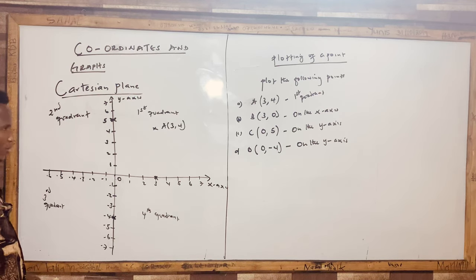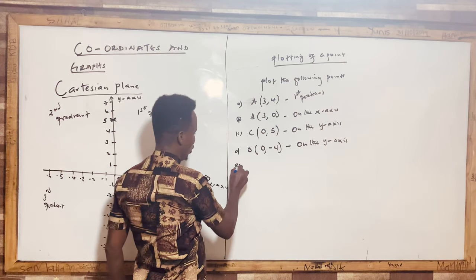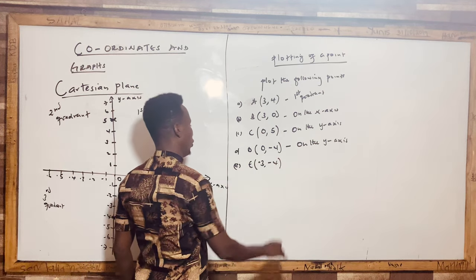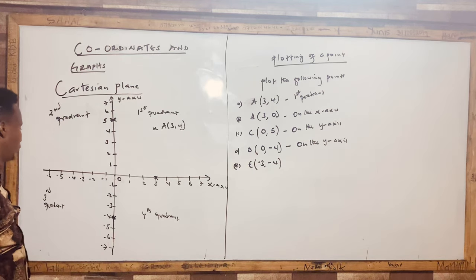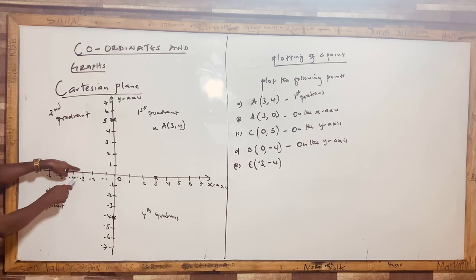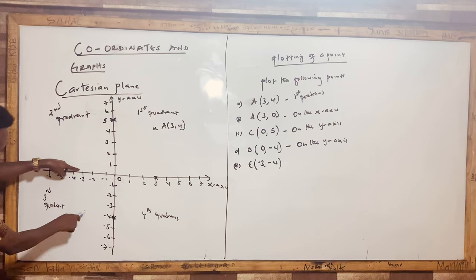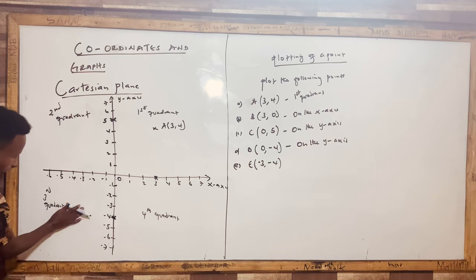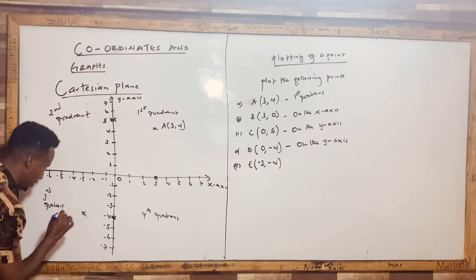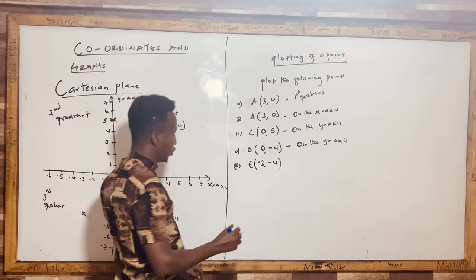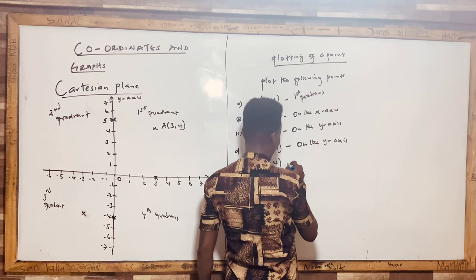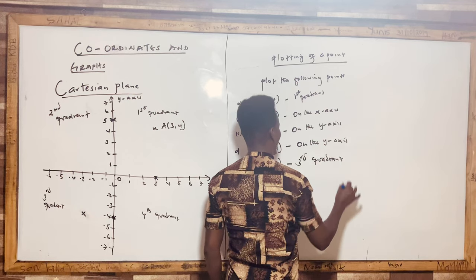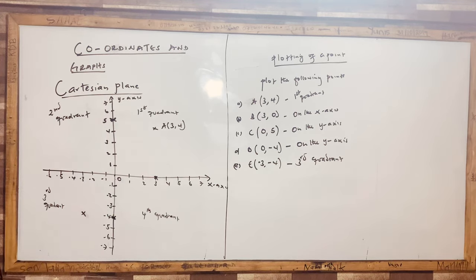Point E is (-3, -4). x is negative 3, so I go to the left, and y is negative 4, so I go down. These two values intersect at a point in the third quadrant.